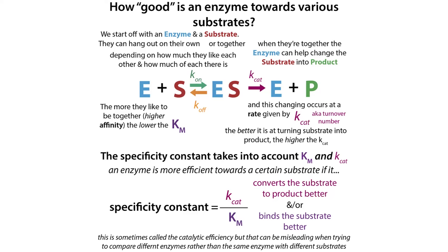We can use the term Kcat/Km, and it's really good if you're trying to analyze the same enzyme with different substrates. But it's not so good if you're trying to compare different enzymes — it can be a bit misleading in that regard. The specificity constant can be used to compare how good an enzyme is for one substrate versus another. If it binds one substrate better, that substrate has a lower Km and therefore a higher specificity constant. If it turns over one substrate faster, the Kcat for that substrate is bigger, giving a bigger specificity constant.